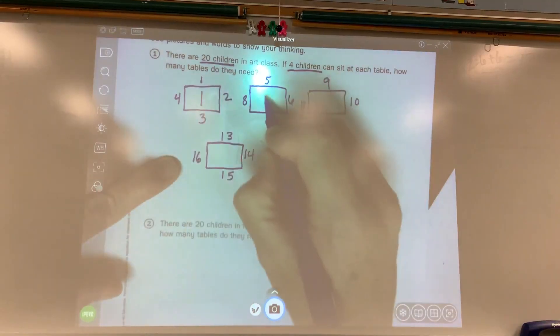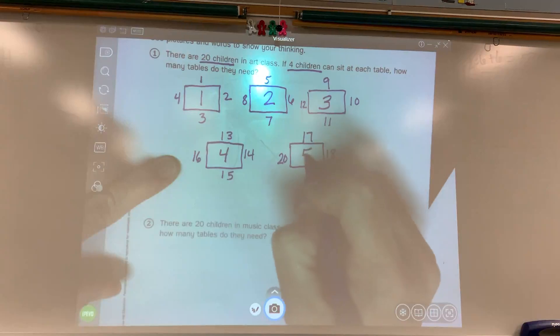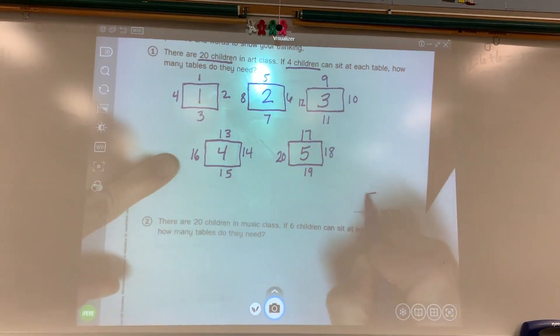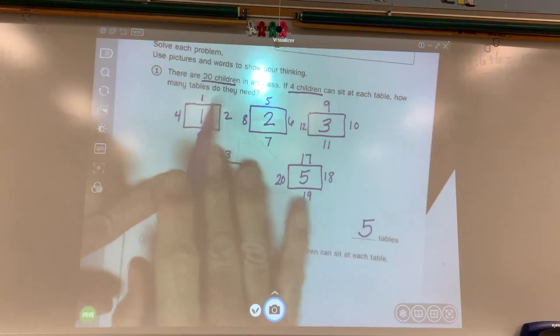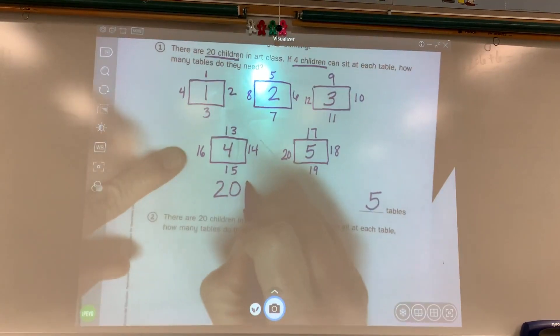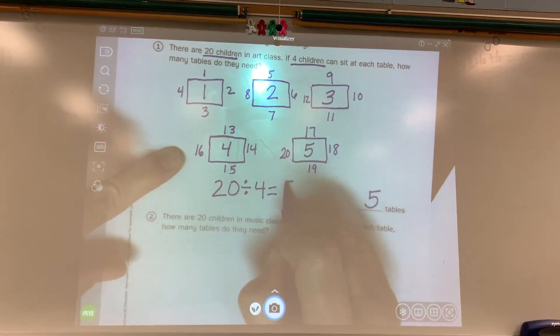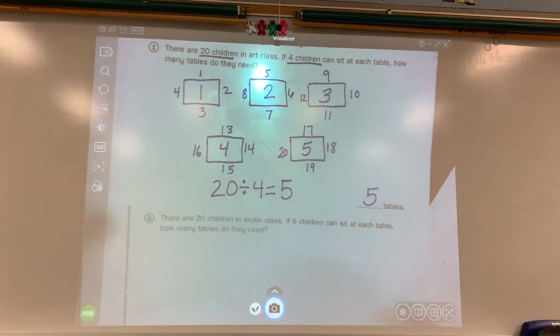I have one table, two, three, four, five. Five tables. 20 divided by four equals five.